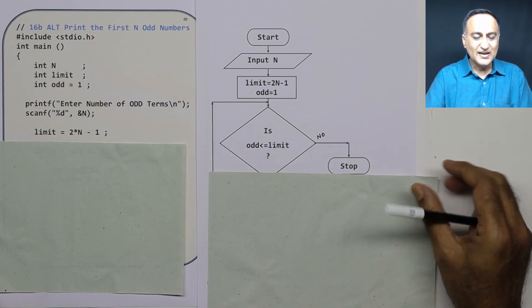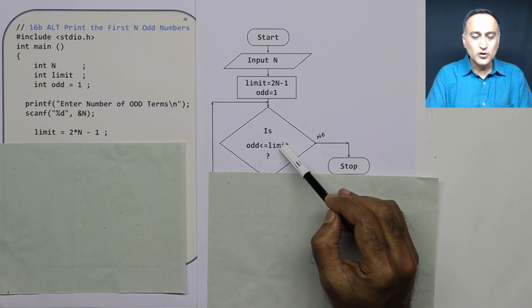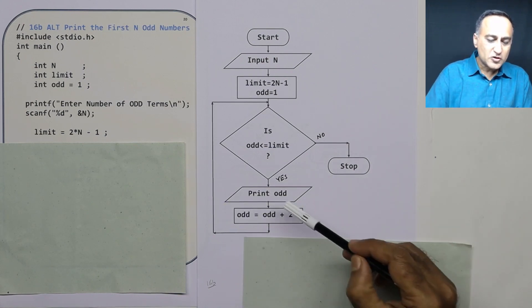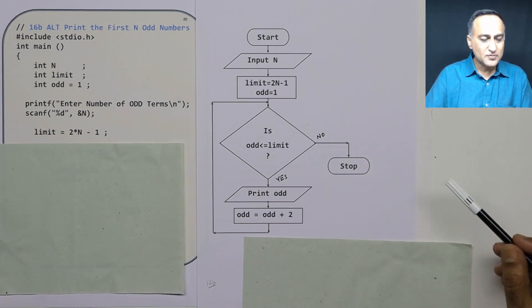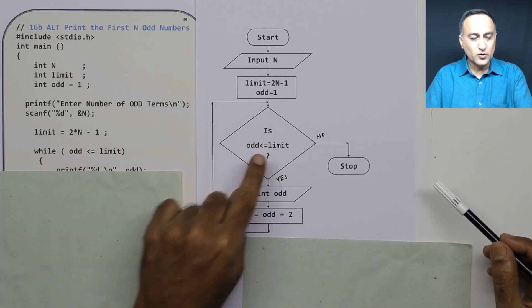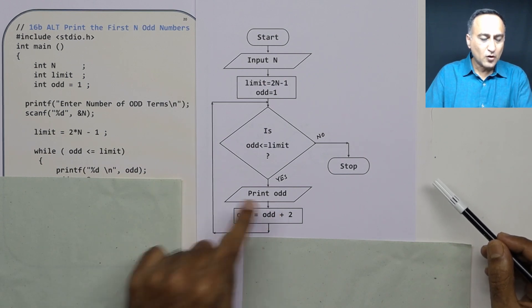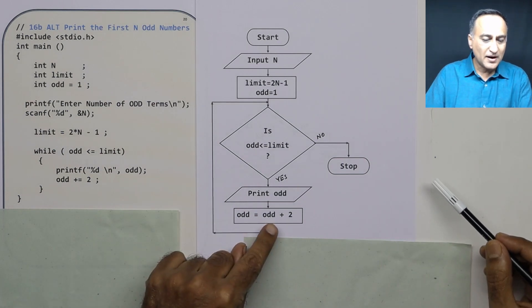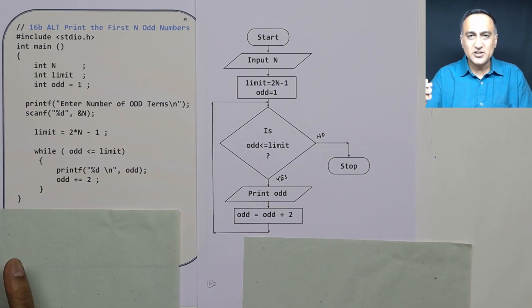The condition is: is the value of the odd number less than or equal to limit? If true, I print the odd number and increase it by 2. If false, I stop. So the while condition is odd less than or equal to limit; I print the odd number, then increase it by 2. This process keeps on continuing until I have reached the limit.